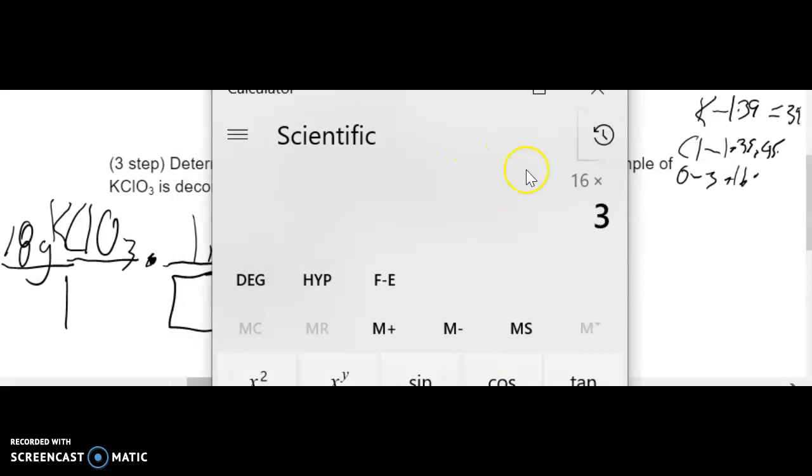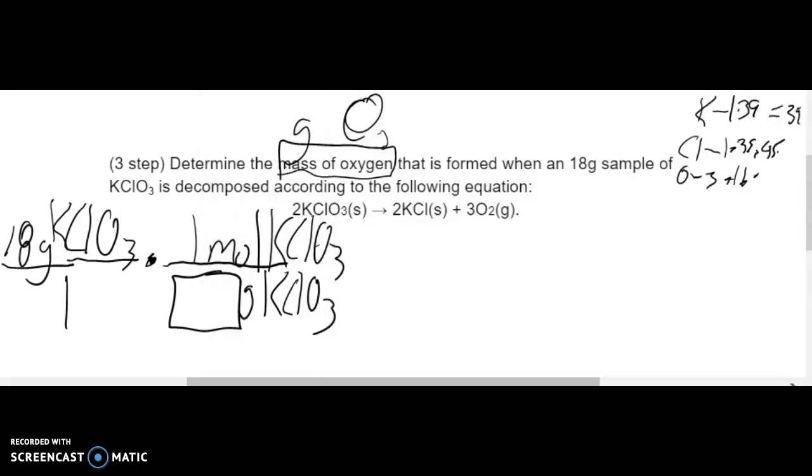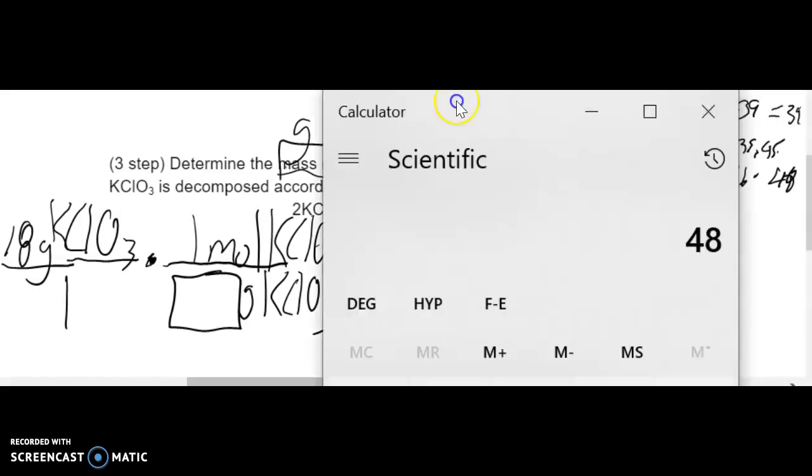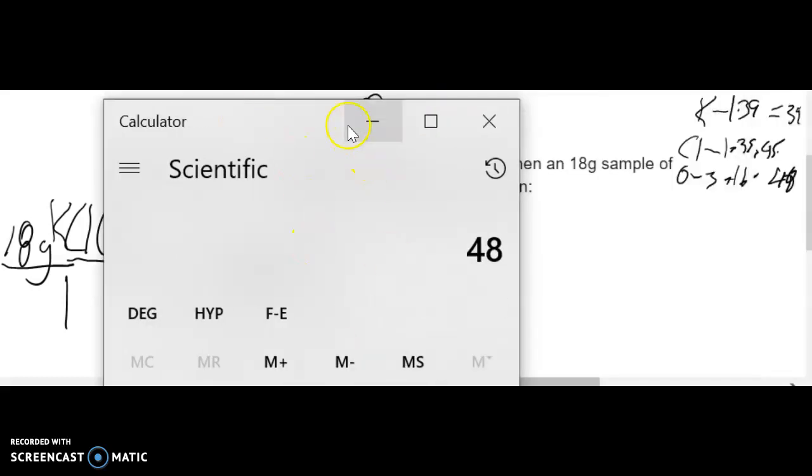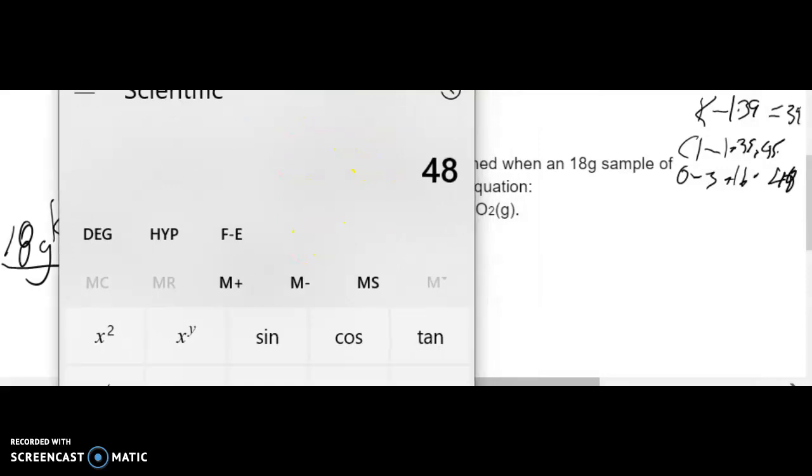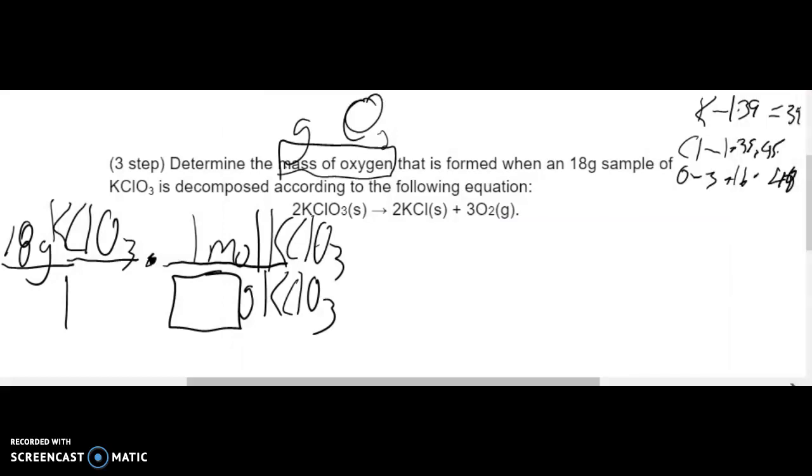16 times 3 is 48.00. All right, so let's add all those up. 48 plus 35.45 plus 39 equals 122.45. So I know the number going here is 122.45.